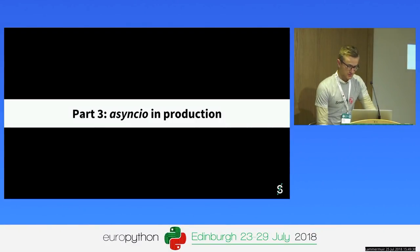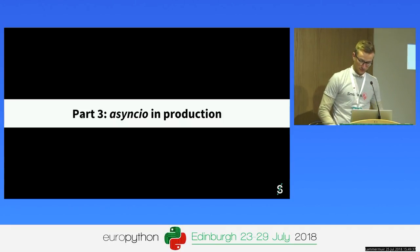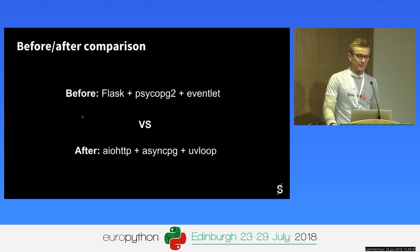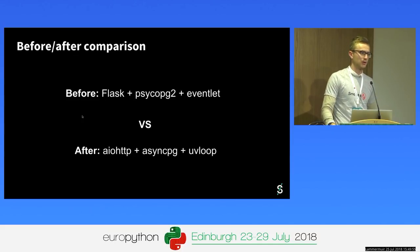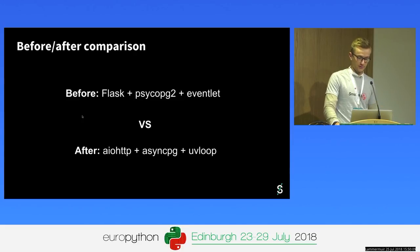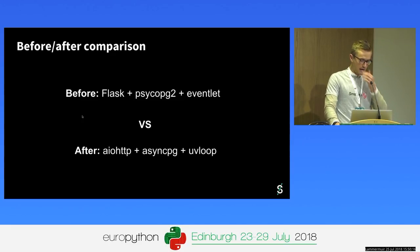So you've migrated your project to async.io — was it worth it? Are you any better off? Let's see how it went for me. I'll look at a before-and-after evaluation of the microservice I described. The before version used Flask, PsychoPG2 for Postgres, and Eventlet to make everything asynchronous behind the scenes. The after version used aiohttp, AsyncPG, and the UV loop — a Python implementation of libuv — to run the event loop. We used WRK to perform HTTP benchmarking of both versions, running each configuration for 30 seconds, 10 times, with a variable number of connections.